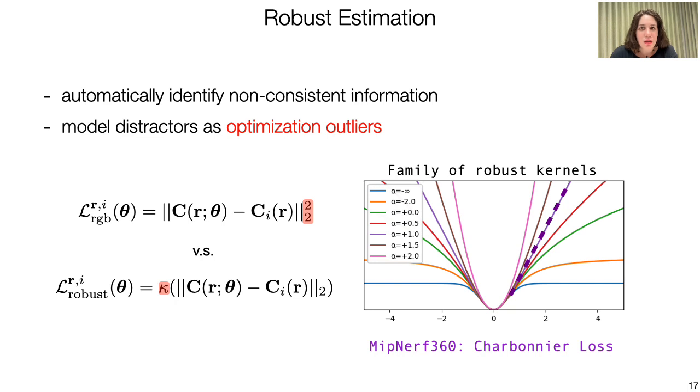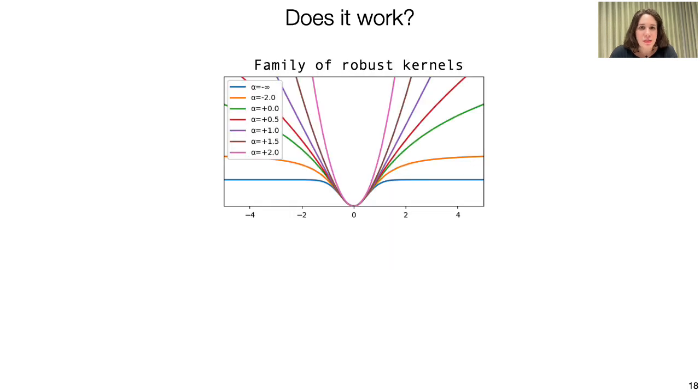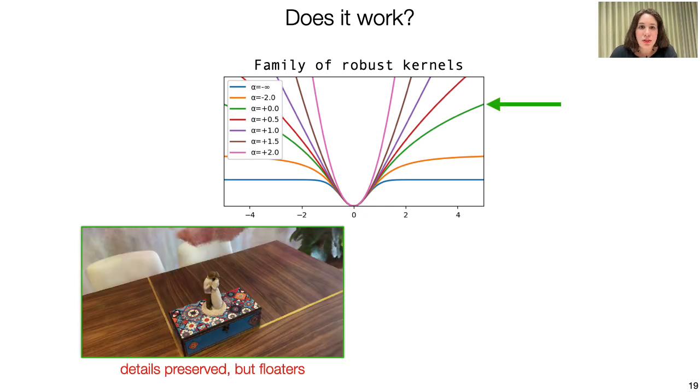We can try other robust losses, but it's not as simple as it looks. With a more liberal loss, you have good details, but you will get some floaters still.